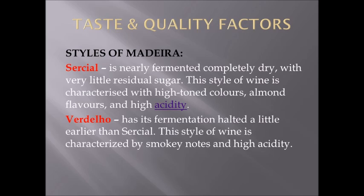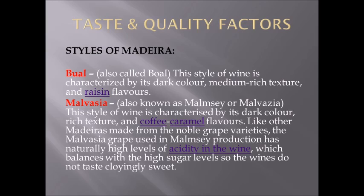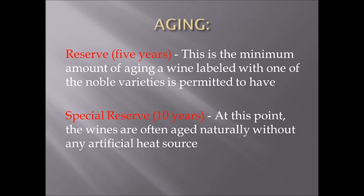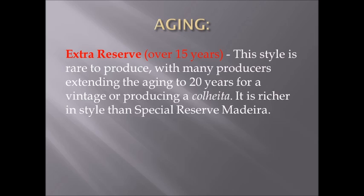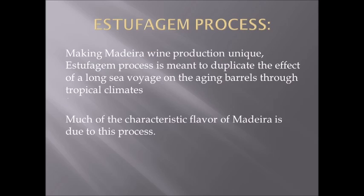DOCs and DOCGs of Italy — starting with Piedmont. Barolo DOCG: five communes — La Morra, Castiglione, Monforte d'Alba, Serralunga, and Faletto. Made with the Nebbiolo grape. Must have two years in oak and one in bottle. Riserva is five total years with at least three in oak. Cru: vineyard designation. Powerful tannic wines — need to be paired with food.